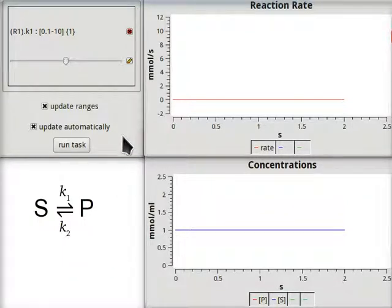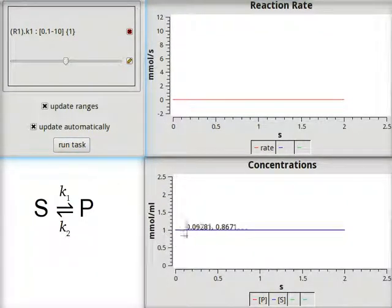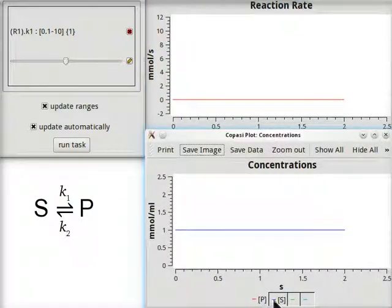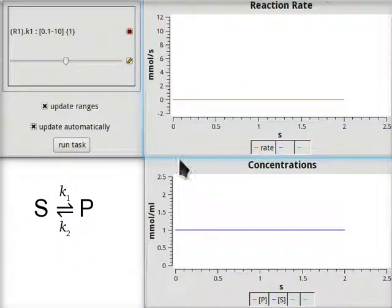And so we expect the system to be in equilibrium. We run the task and we see the concentrations of S and P both displayed here, although overlaying each other, are both equal to one. And they do stay equal to one all of the time.